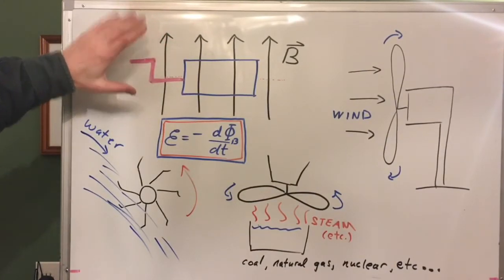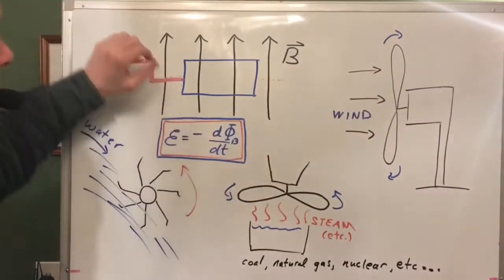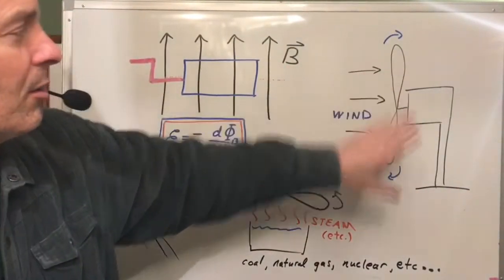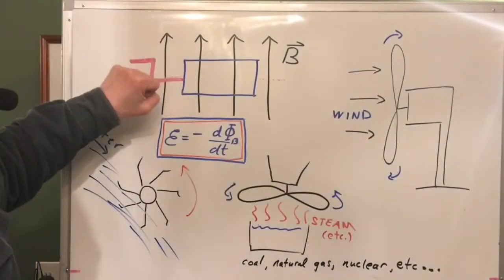For example, we could get the wind to turn the crank for us. All a wind turbine is, is some mechanism to use the wind to turn the handle on the crank for us so we don't have to do it ourselves.